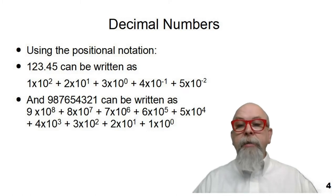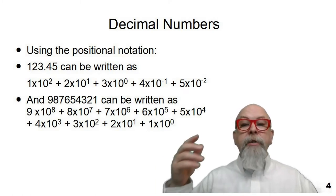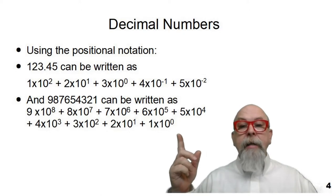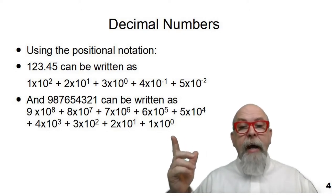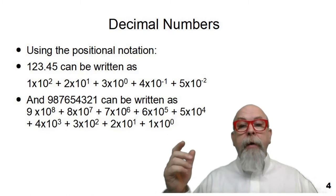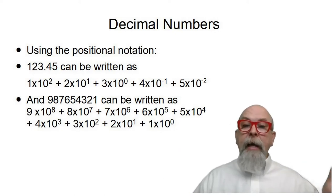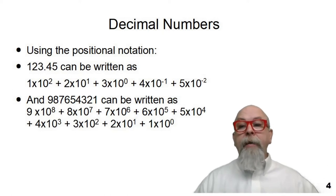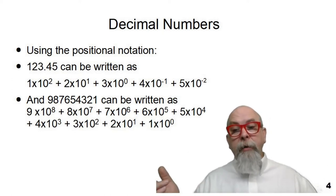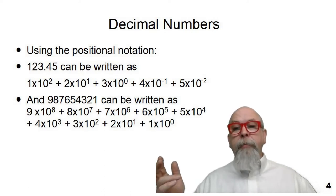We can see the positional notation here that the number 123.45 is written, you can really think of it as 1×10² + 2×10¹ + 3×10⁰, plus 4×10⁻¹, plus 5×10⁻², where the first digit on the left of the decimal point is 10 to the 0th power, or 1, multiplied by 1. And the number on the right of the decimal point, the first number on the right of the decimal point, is multiplied by 10 to the negative 1, or 0.1.